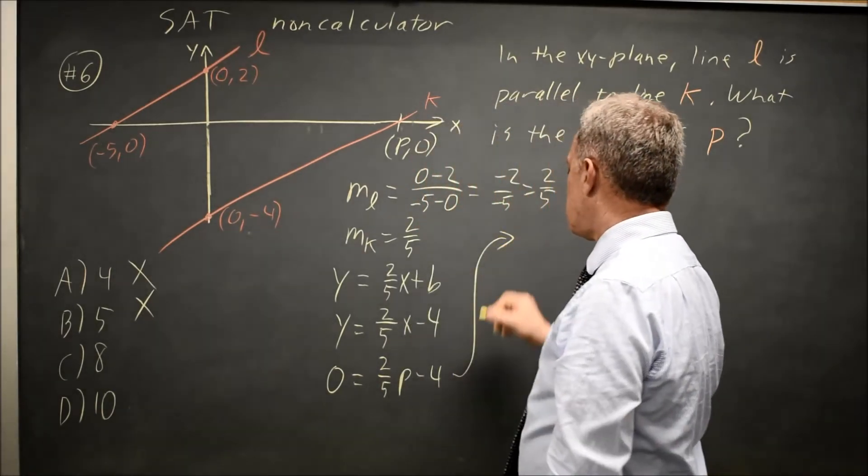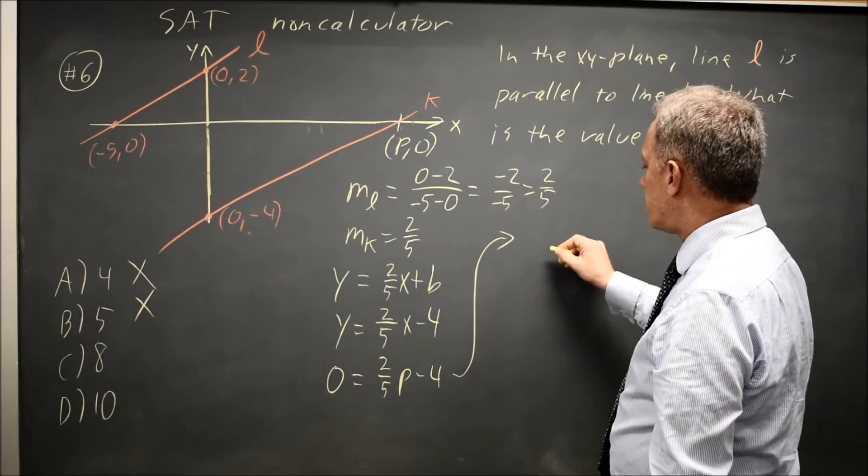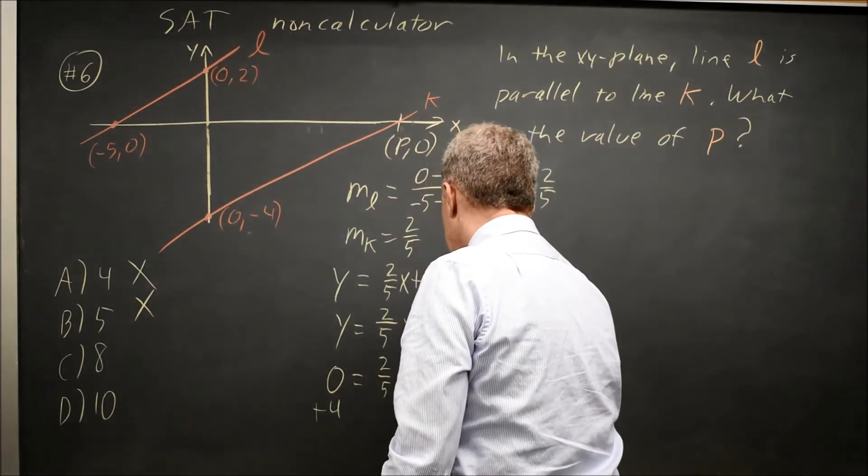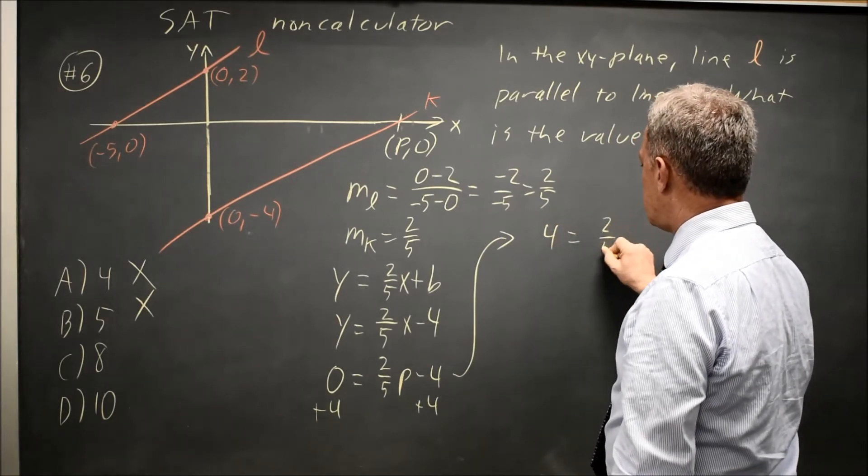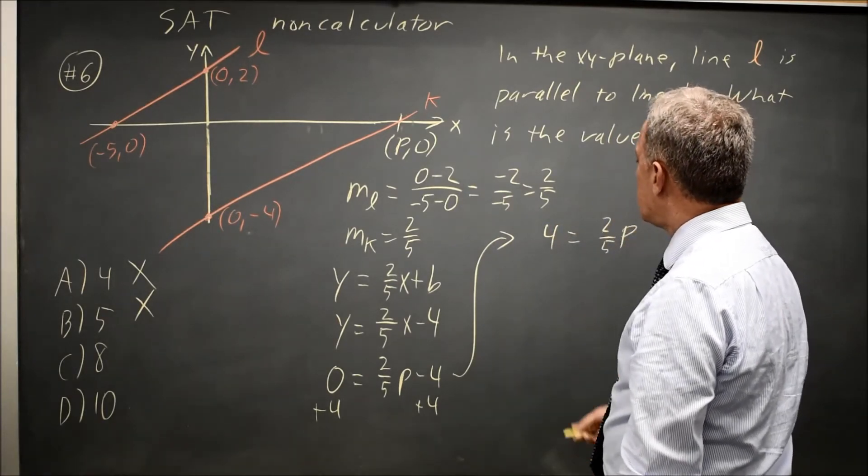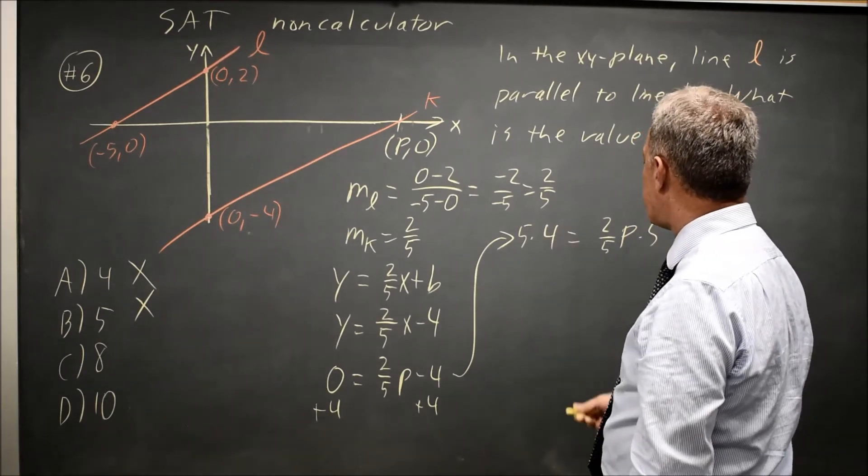College Board wants us to solve for p. So let's add 4 to both sides, and that gives me just 4 on the left equals 2 fifths p. If I multiply both sides by 5, that gets rid of the fraction. I like getting rid of fractions.